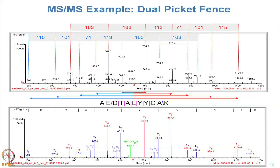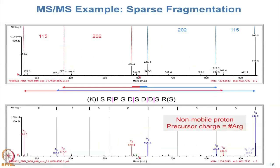Not all spectra are as beautiful — some peptides fall apart and do not give anywhere near as complete sequence information. With a poor quality spectrum, the best we can do is identify some symmetry and at least one mass gap consistent with an amino acid. There may be a couple of combinations of amino acids that add up to 202, but when you search a database, this is the only peptide consistent with all that information.